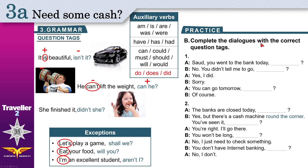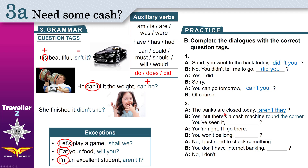Now practice the dialogues. 'You went to the bank today' — past simple, no auxiliary verb, use 'did'. Affirmative sentence, so tag is negative: 'didn't you?' 'You went to the bank today, didn't you?' — 'No, you didn't tell me to go.' 'You didn't' — negative, make tag affirmative: 'did you?' 'You can go tomorrow' — 'can' is affirmative, make it negative: 'can't you?' The banks are closed — 'are' is affirmative, tag is 'aren't they?'